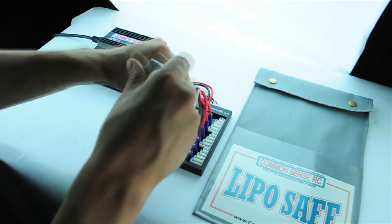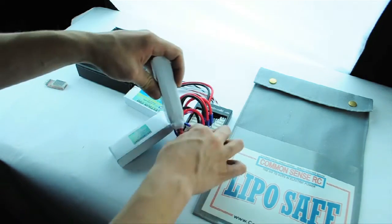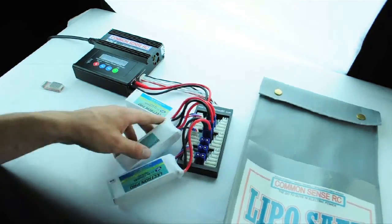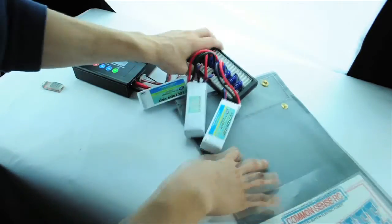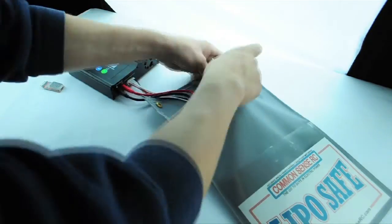Once the para board charge leads and balance connectors are hooked up to the charger and all the packs being used have been plugged in, place the batteries inside your LiPo safe bag. Now we are ready to program the charger.